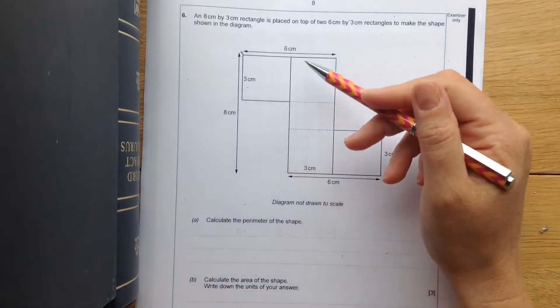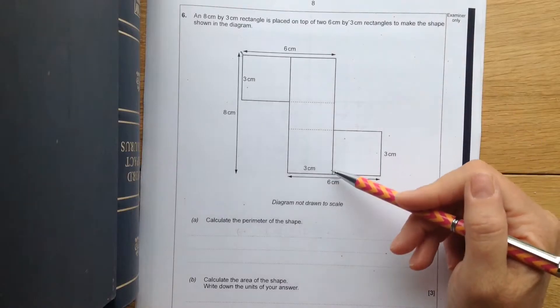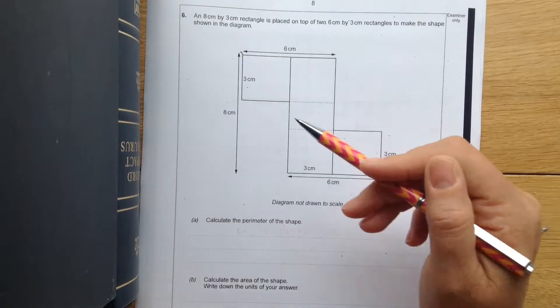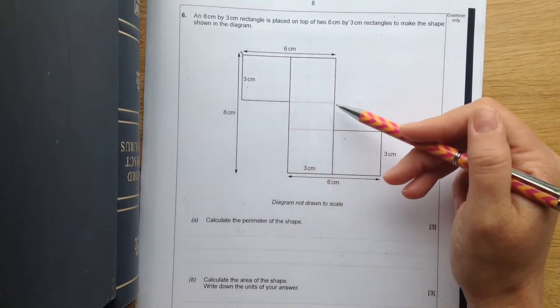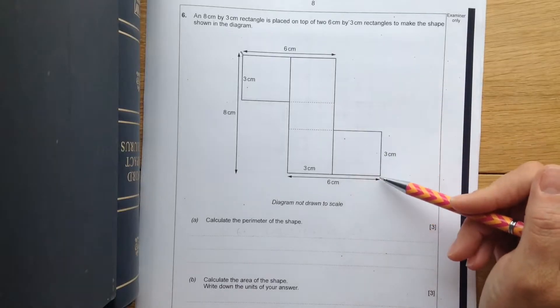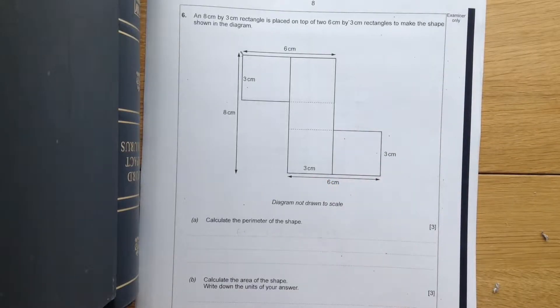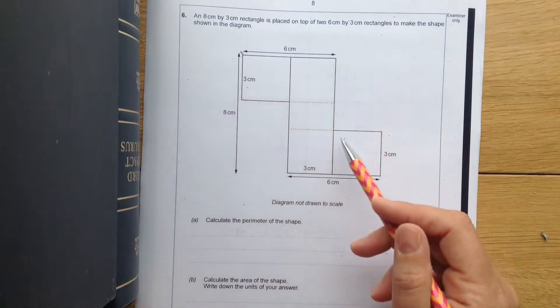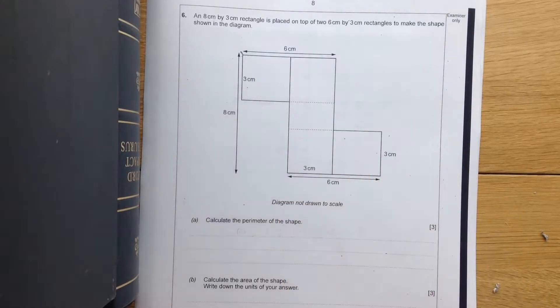So what we've got is a 3x8 rectangle there and on top of it we've got a 3x6 rectangle here and a 3x6 rectangle there. Calculate the perimeter of the shape. So we know that perimeter means the distance around the outside edge. Before we start we're going to put on all the missing lengths.